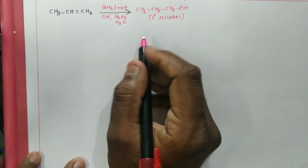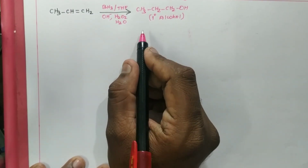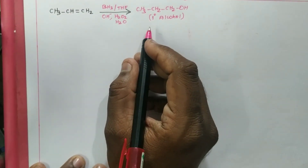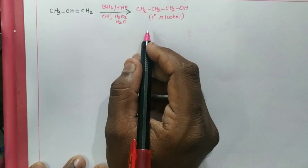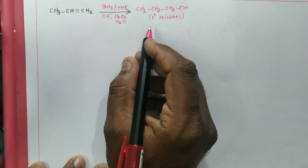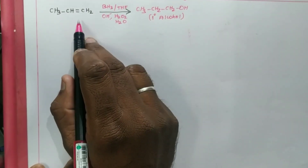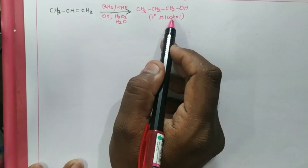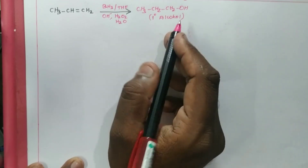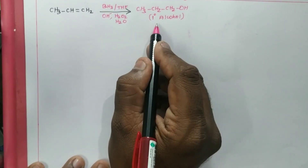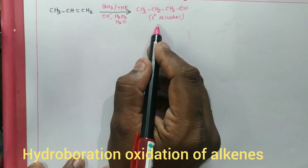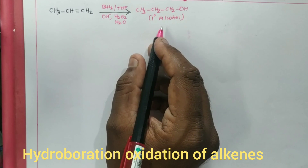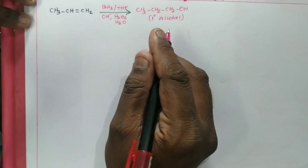Welcome to our channel. Today we are going to talk about the hydroboration-oxidation mechanism of alkene to form alcohol. It is a specialized mechanism for preparing primary (1°) alcohol, and that is what makes it play a very important role here.